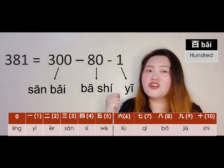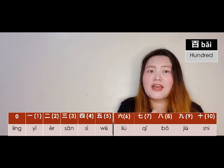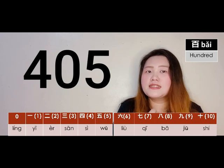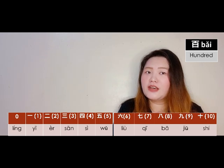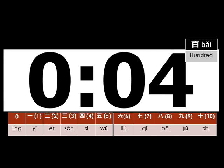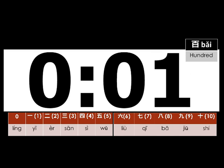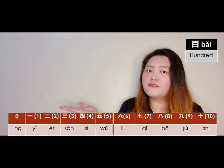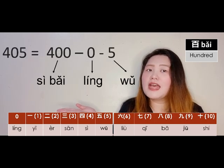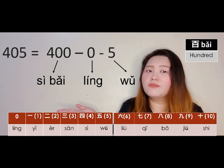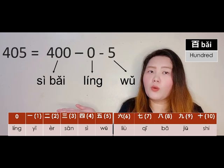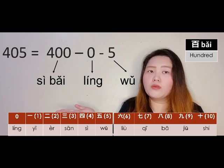Let's try 405. Four hundred is 四百 (sìbǎi). Remember zero is 零 (líng). Then five is 五 (wǔ). So 405 is 四百零五 (sìbǎi líng wǔ). Did you get it?